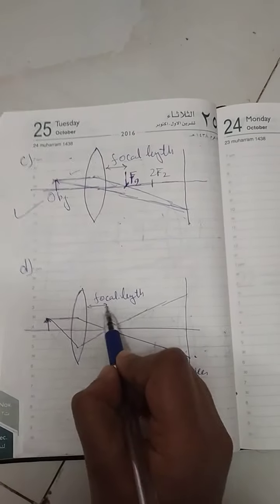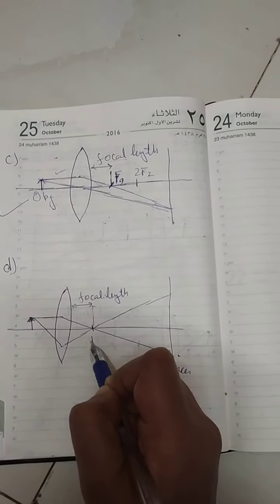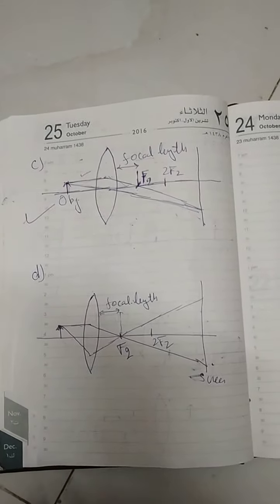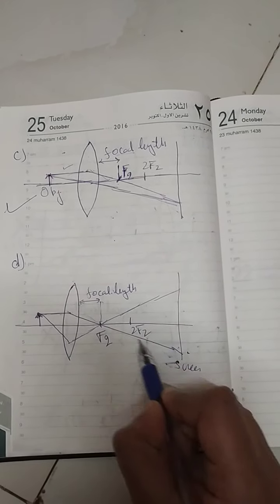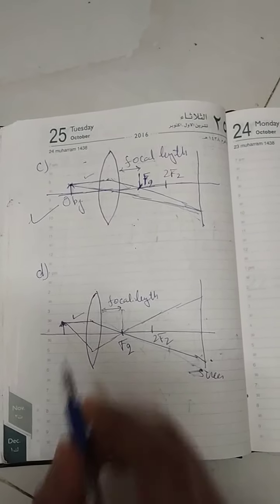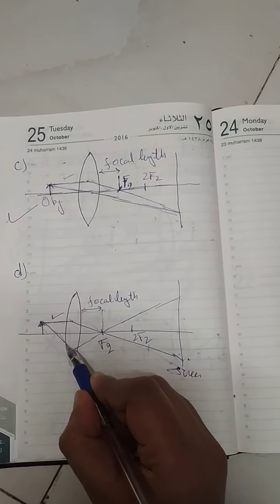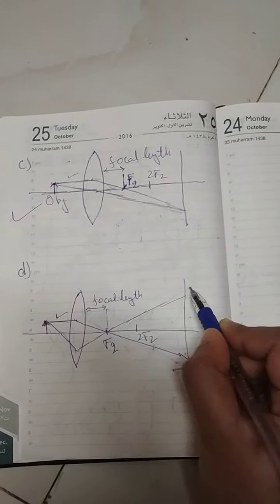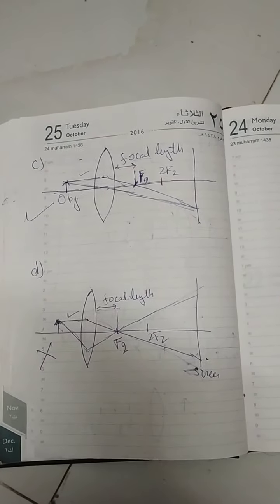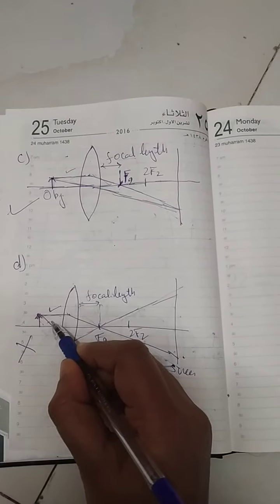In this figure, this is my focal length f2. If a line is parallel to the principal axis, after refraction it passes from f2 - this ray is correct. But the other ray is bending incorrectly. There is no rule for such a ray, so this diagram is not correct.